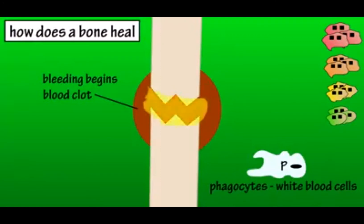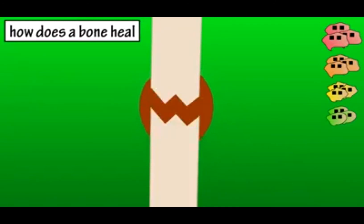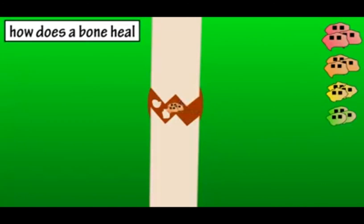Phagocytes, which are white blood cells, will come in and help clean up the area by removing dead cells and any germs that may have entered the area. As the blood clot reduces, osteoclasts appear and take care of dead bone fragments.